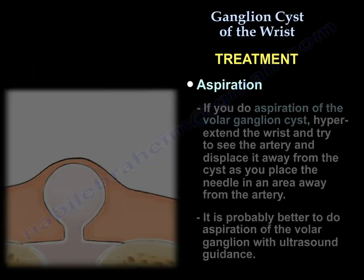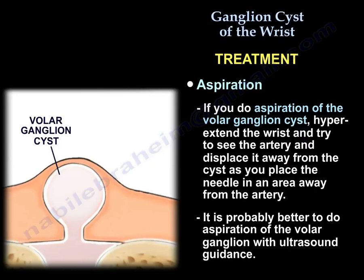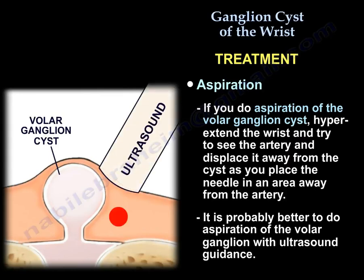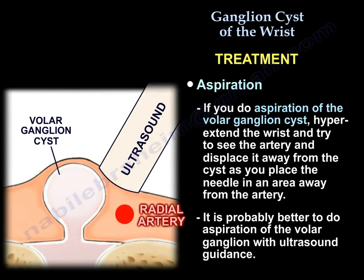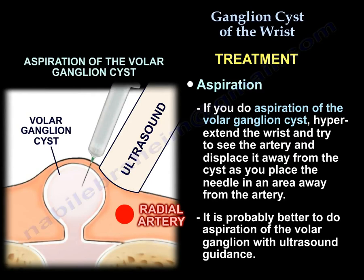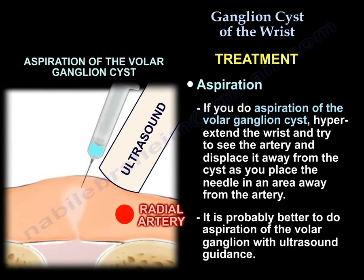If you do aspiration in the volar ganglia, you will need to hyper-extend the wrist, try to visualize the artery, and displace it away from the cyst as you put the needle in an area away from the artery. It is probably better to do aspiration of the volar ganglia under ultrasound guidance.